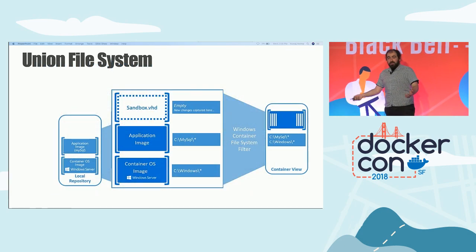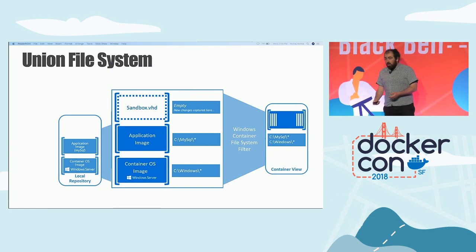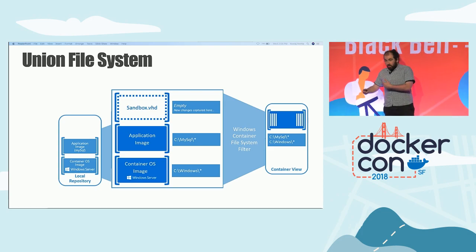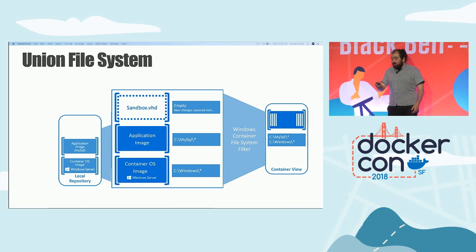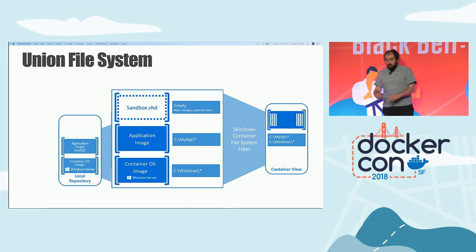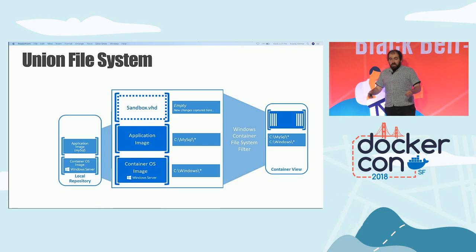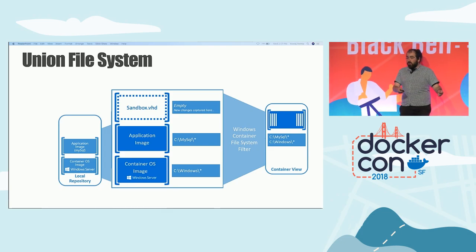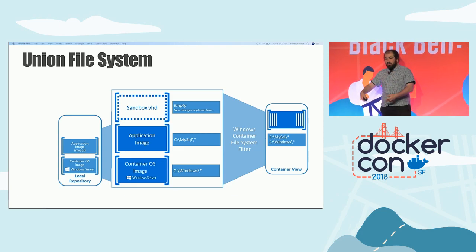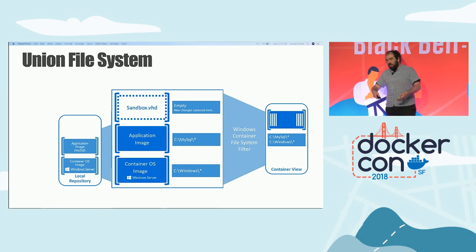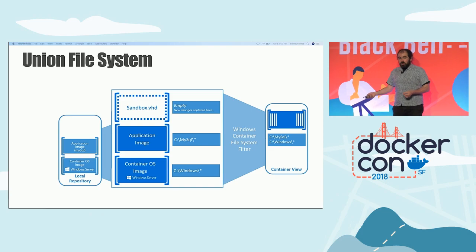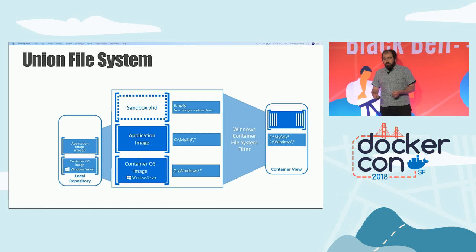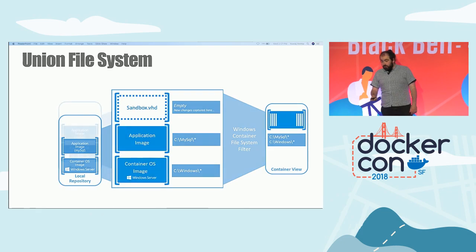Next is the file system. We've talked about a separate object namespace provided to a container, but what does that mean for the file system? What is their root folder and how do they start booting? For that, we had to build the container file system filter. We didn't have a union file system before Windows Server 2016 that would allow us to take folders with special reparse tags indicating a parent layer — if the child doesn't have data for a file, it looks to the parent. The file system filter also creates a union FS that merges in a read-write layer at the top, done as a mounted VHD, so any changes the container makes to the file system are applied to that VHD rather than to the container layers themselves.